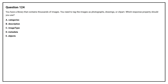Question number 124. You have a library that contains thousands of images. You need to tag the images as photographs, drawings, or clip art. Which response property should you use? Option A: Categories. Option B: Description. Option C: Image Type. Option D: Metadata. Option E: Objects. The correct answer is Option C: Image Type.